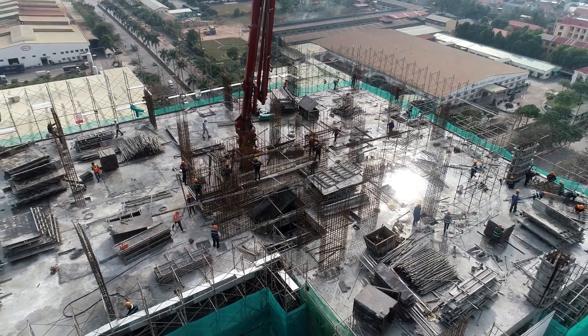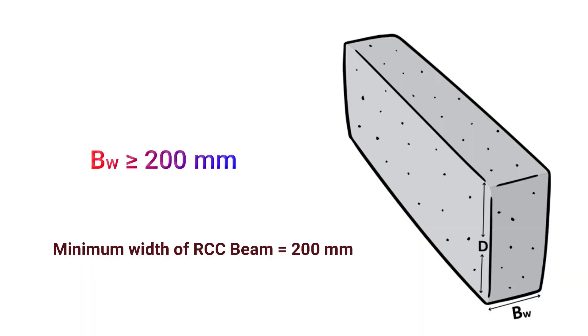While deciding the size of an RCC beam, the minimum width shall be considered as 200 mm. That is, BW shall be greater than or equal to 200 mm.